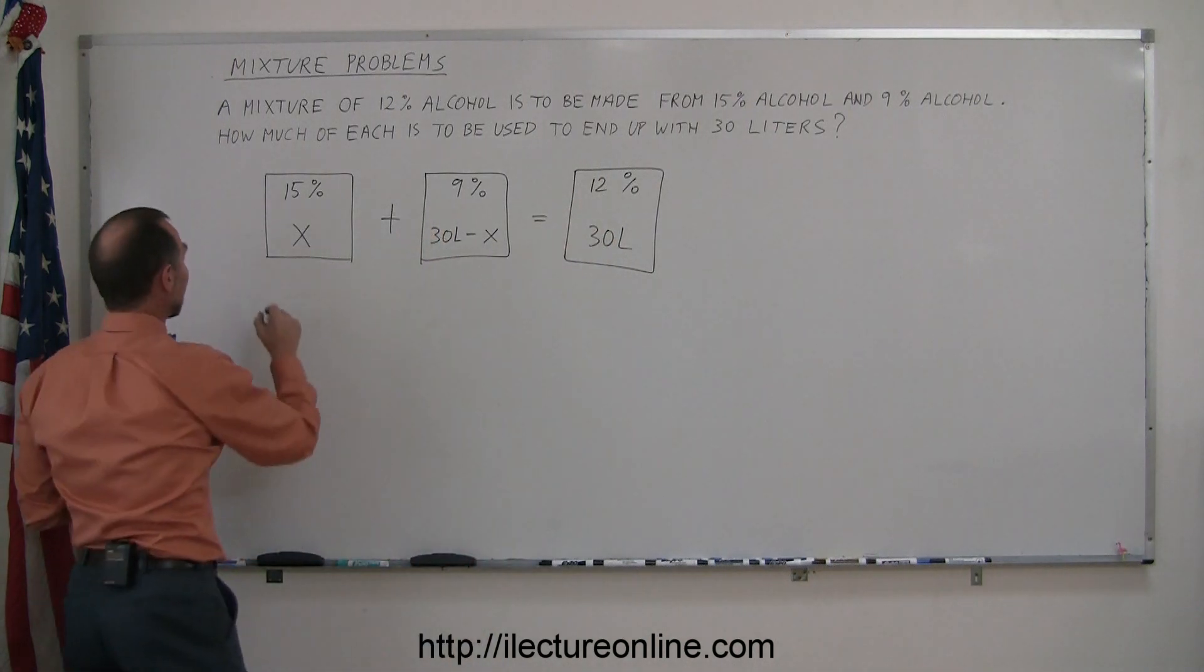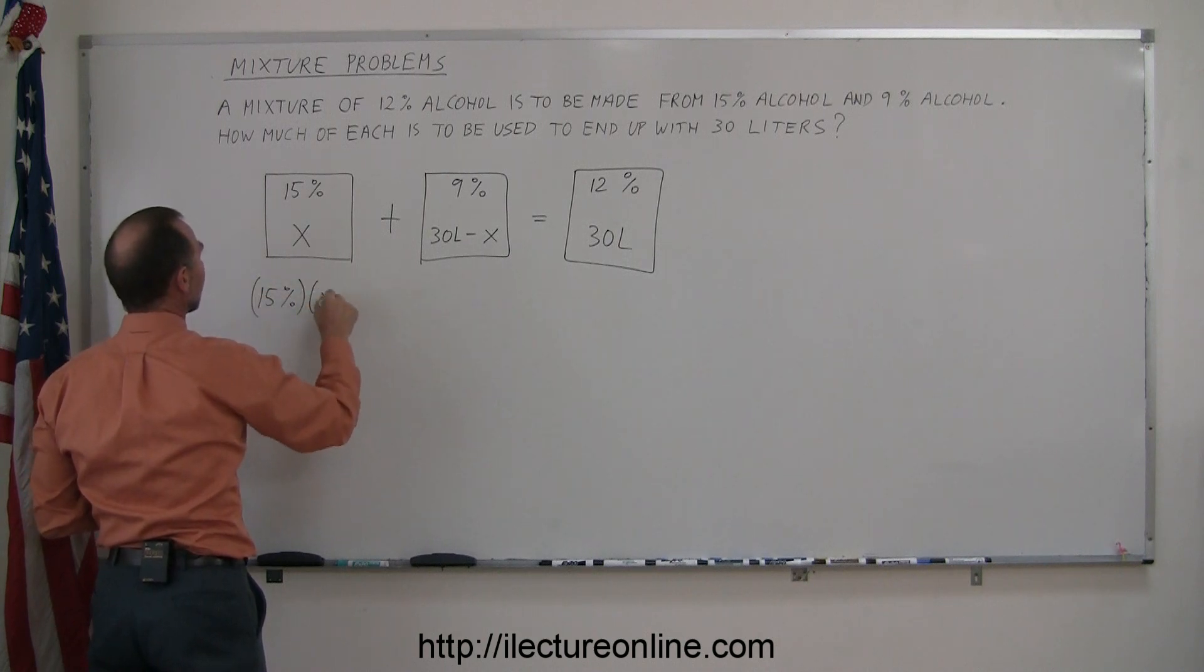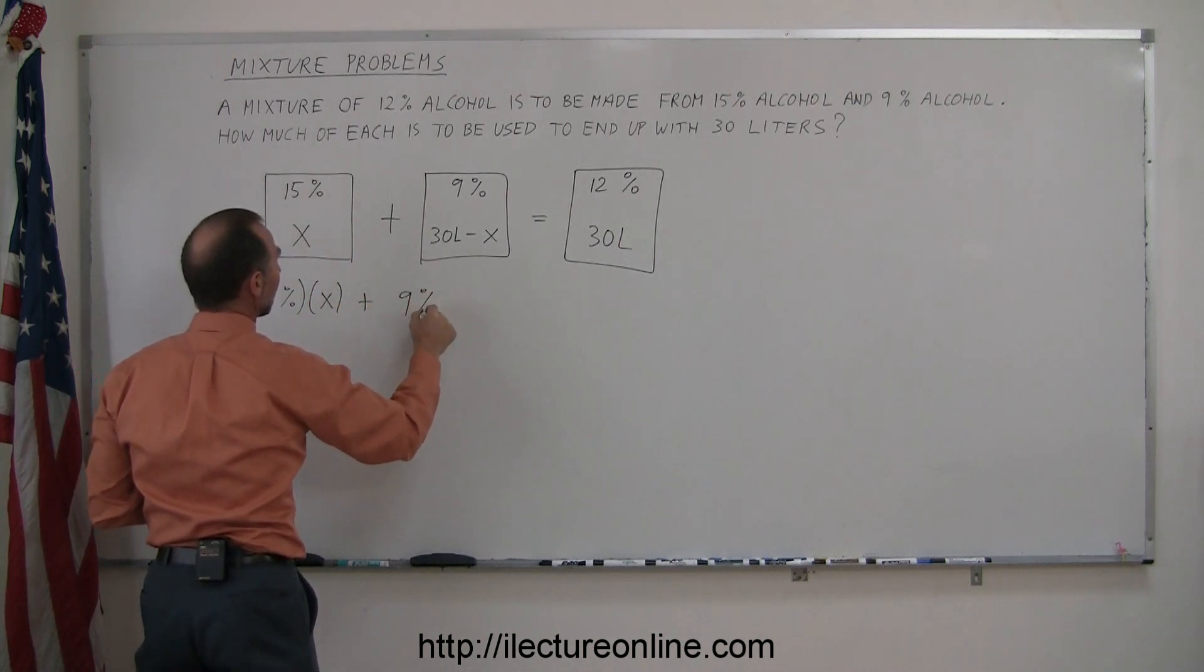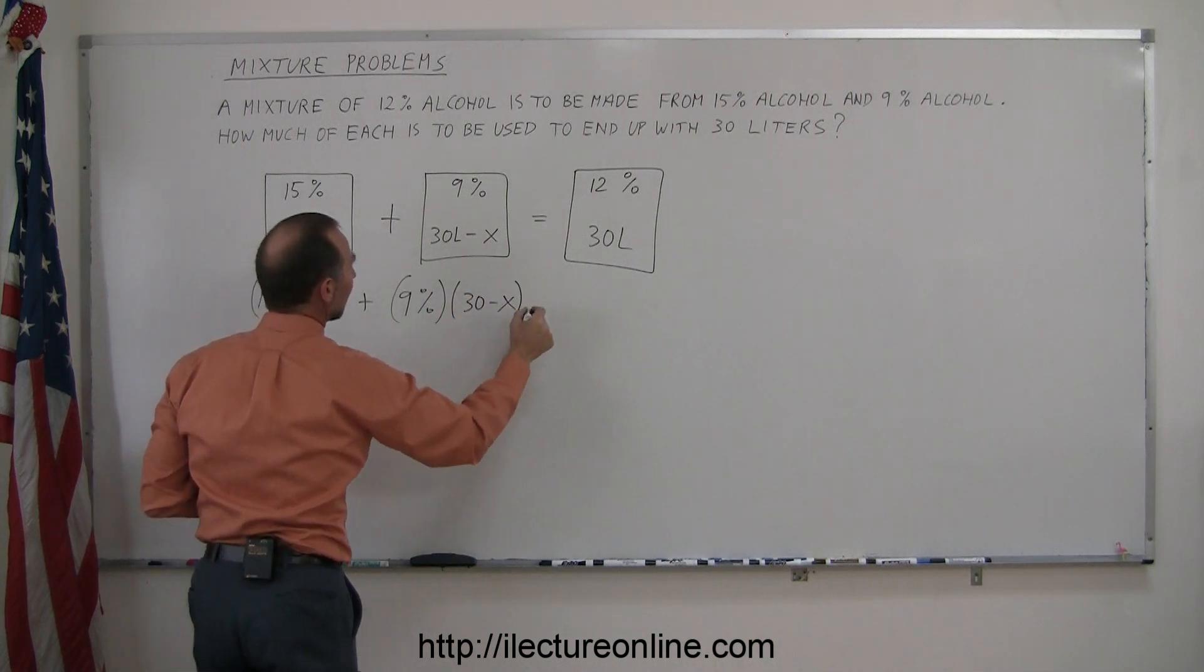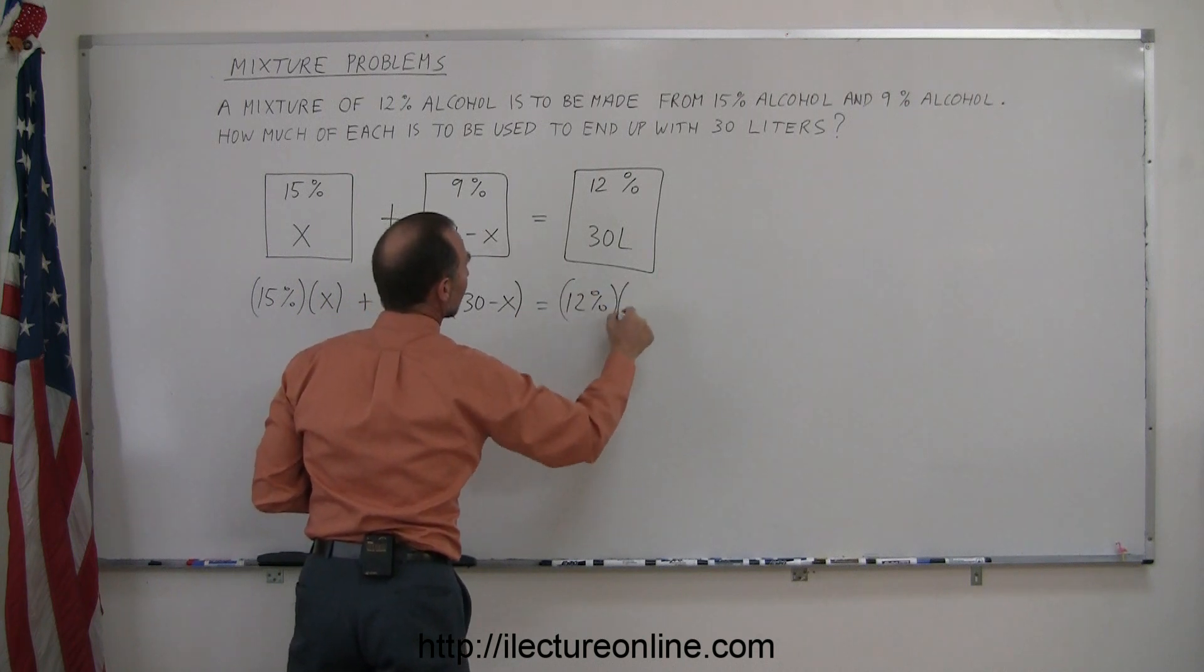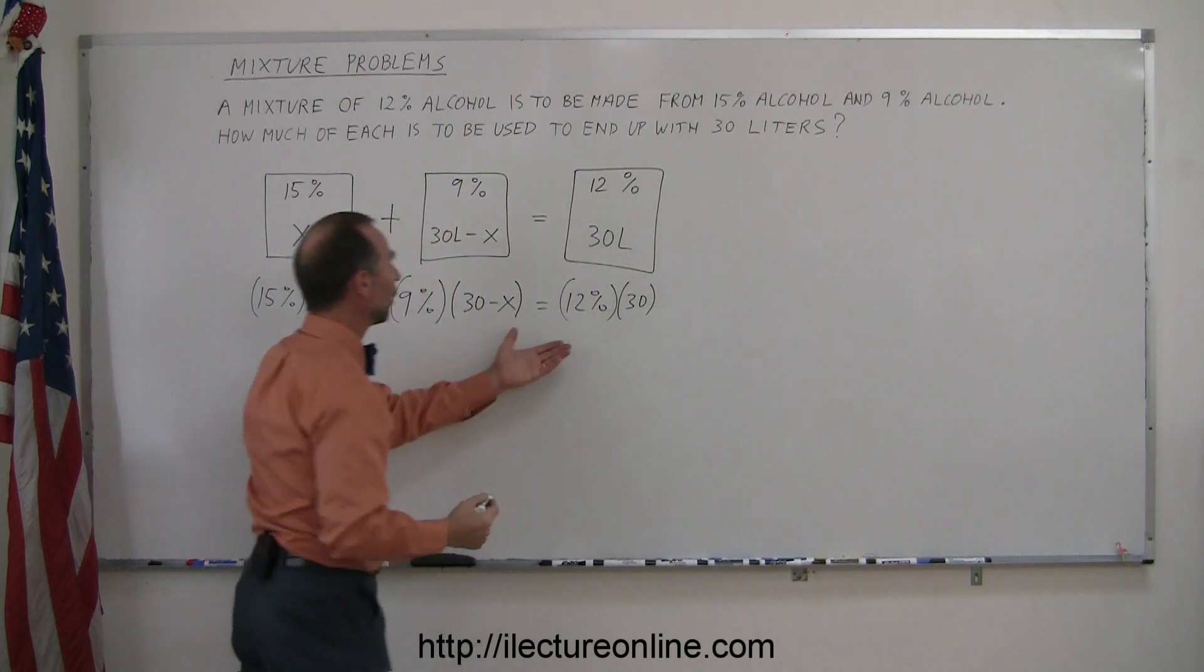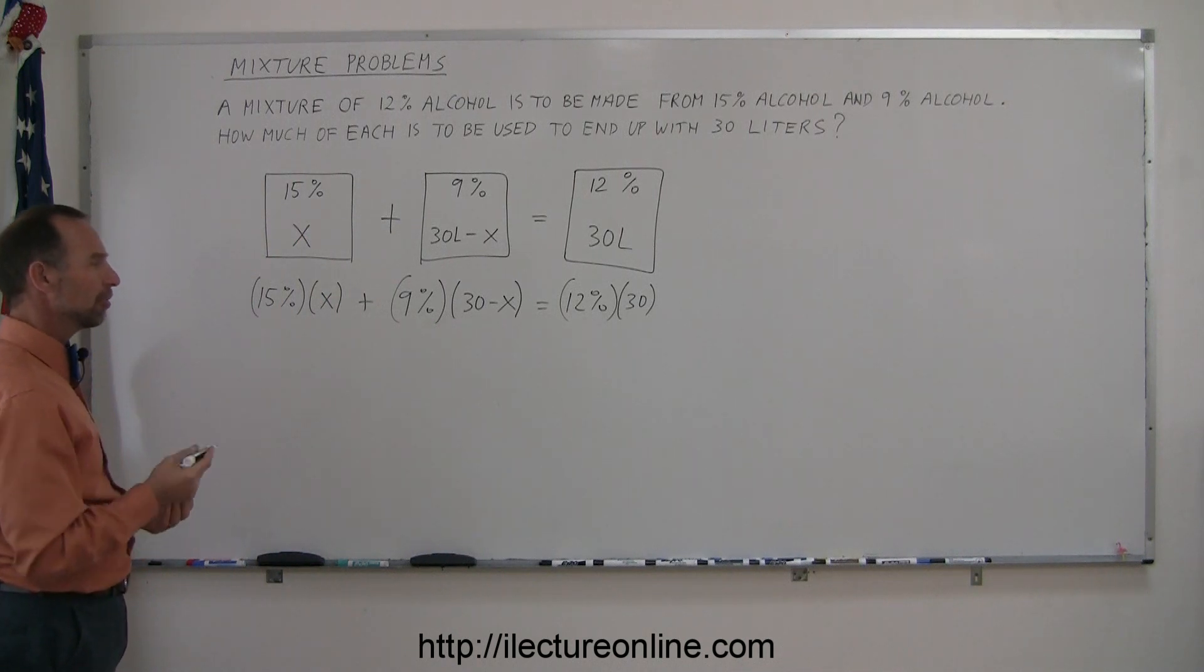Which means that 15% times X plus 9% times 30 minus X is equal to 12% times 30. And now all you have to do here is solve that equation for X. The first thing we probably want to do is get rid of the percent and write as a decimal.